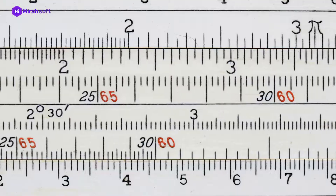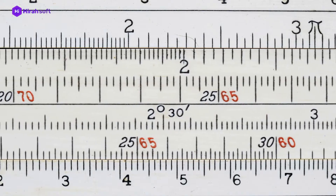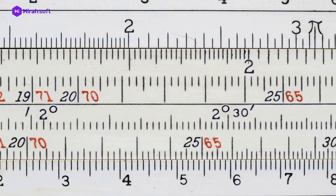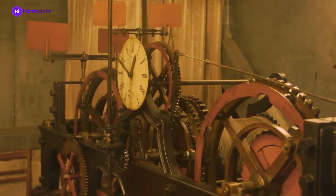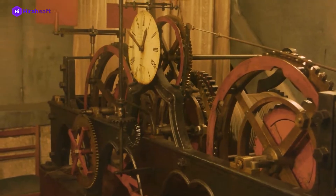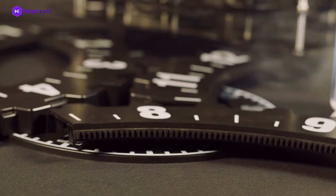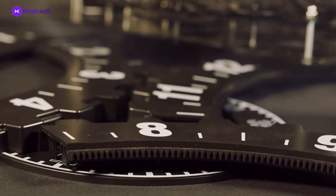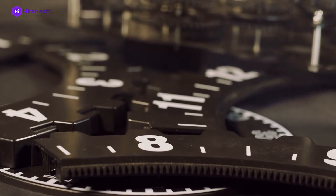The slide rule, a type of analog computer used for multiplying and dividing numbers, was invented. The Pascaline, a popular mechanical computer, was invented by Blaise Pascal. Charles Babbage invented the Difference Engine, which tabulated polynomial equations using the method of finite differences.